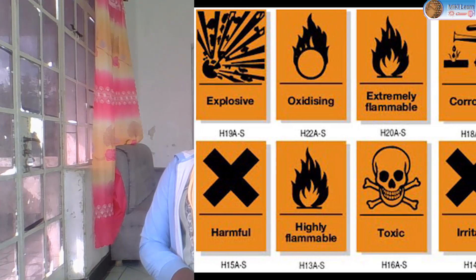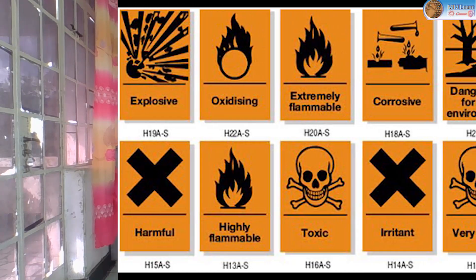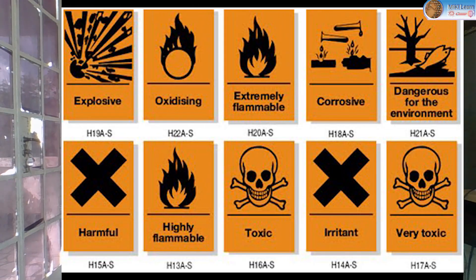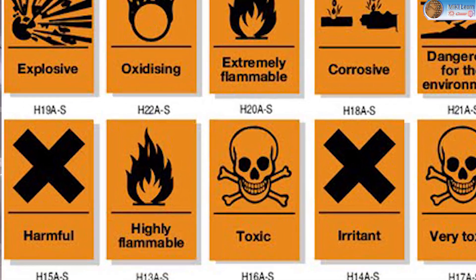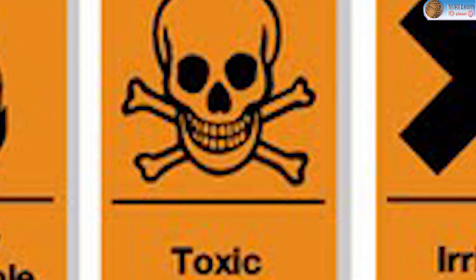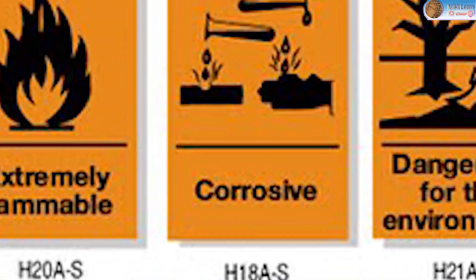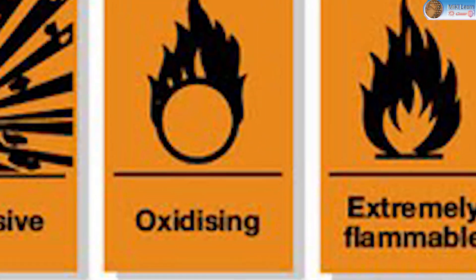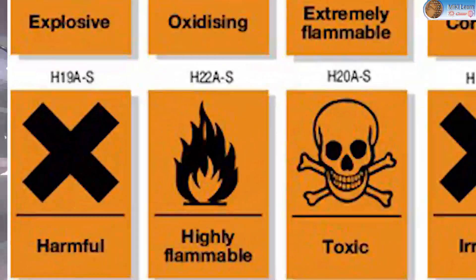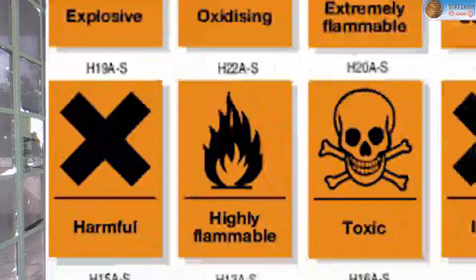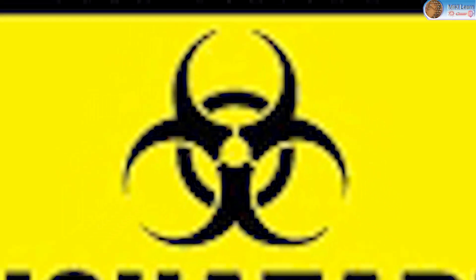A hazard symbol is a sign which indicates danger that can be caused by a particular substance or contamination. Examples include: toxic substance, flammable substance, corrosive substance, oxidative agent, harmful substance, explosive substance, radioactive substance, and biohazard.